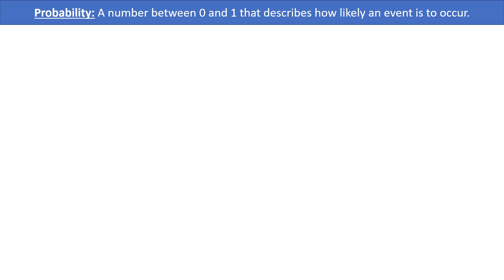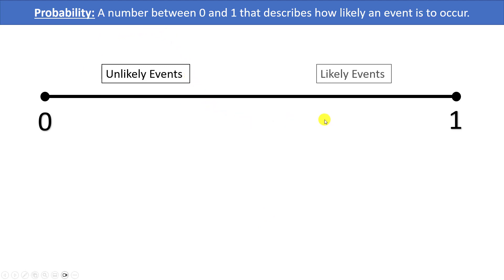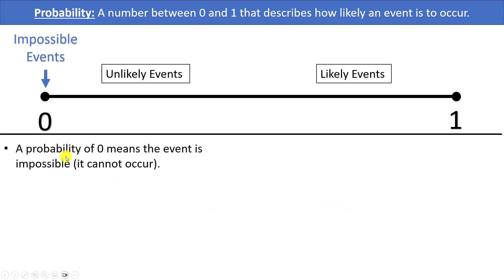You can think of probability on a number line. Events that are less likely will have a probability closer to 0, and events that are more likely will have a probability closer to 1. A probability of exactly 0 means that the event is impossible — it cannot occur. An example would be the chance of rolling a 7 on a six-sided die.